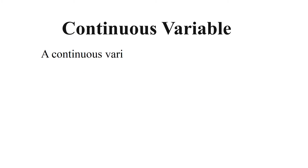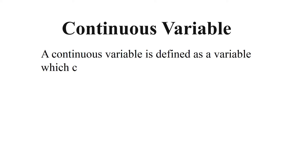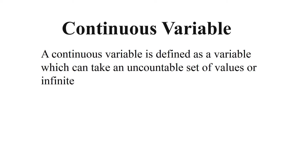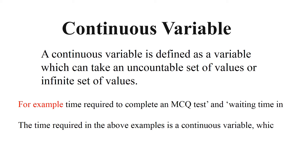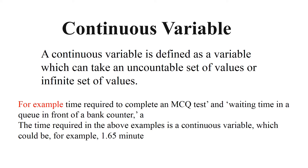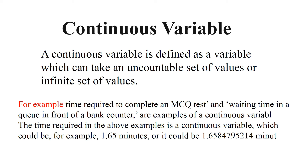Now let's discuss the continuous variable. A continuous variable is defined as a variable which can take an uncountable or infinite set of values — the complete opposite of a discrete variable. For example, the time required to complete an MCQ test and the waiting time in a queue in front of a bank counter are examples of continuous variables.